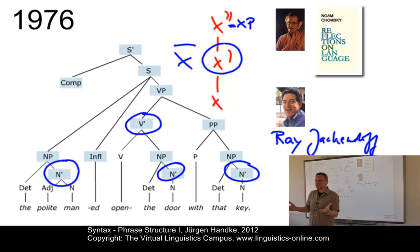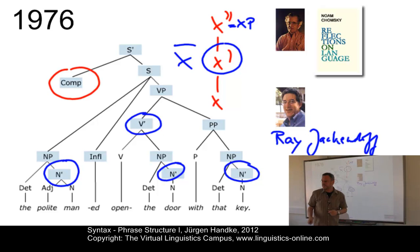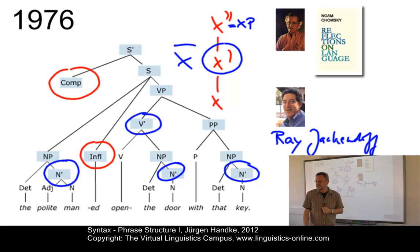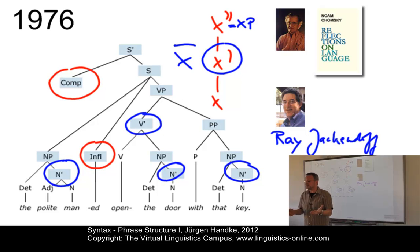What was new in this system apart from the intermediate level? We have a new node called complementizer — a node for all elements that can be moved into sentence-initial position, for example WH elements like which and who, that, conjunctions, etc. We also have, similar to the 1957 system, an inflection node — infill — which is filled with the inflectional properties of the verb. In English, these are all parts of the verb group except the main verb itself.